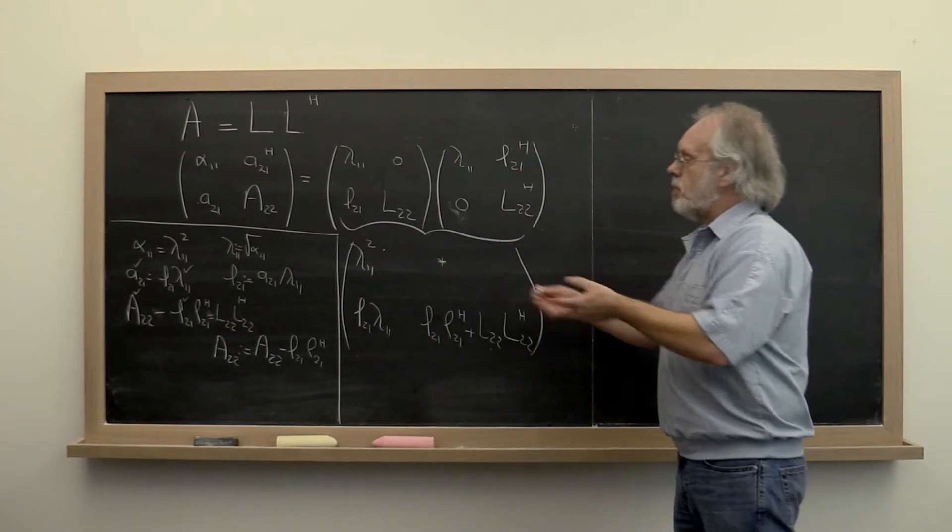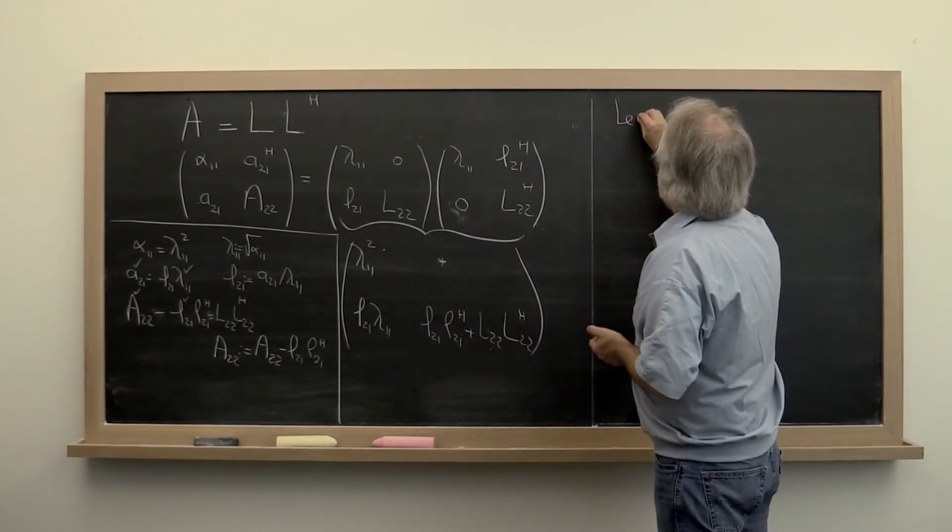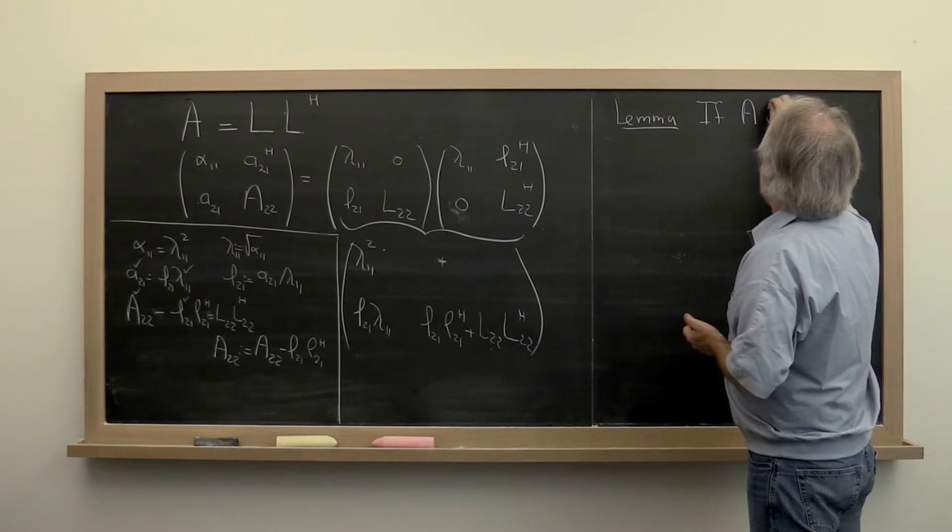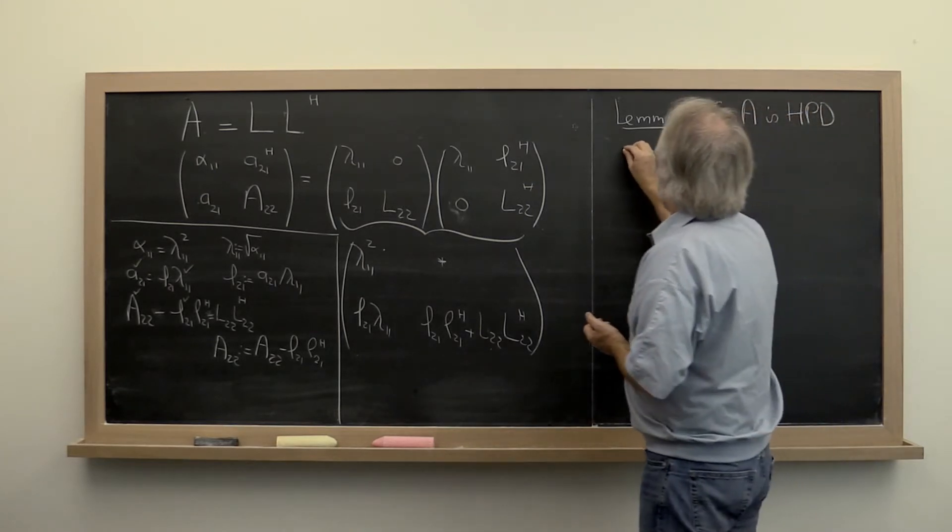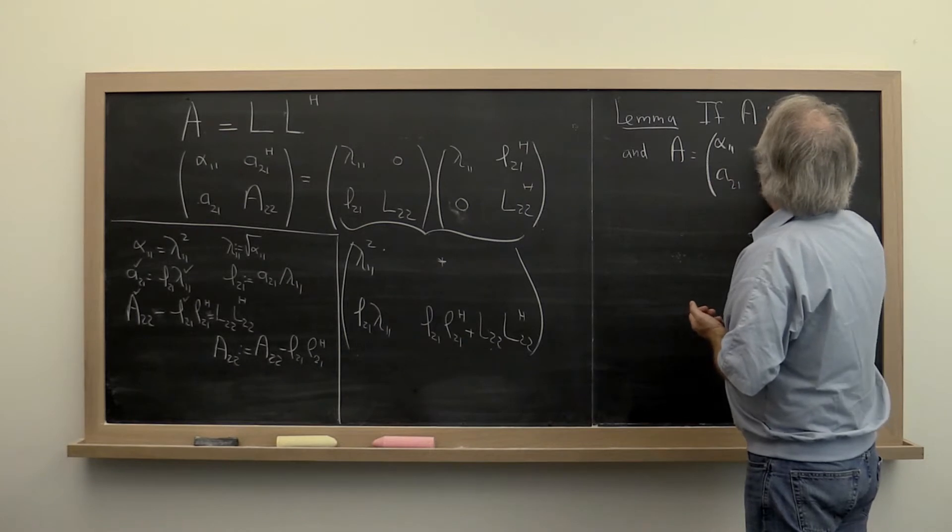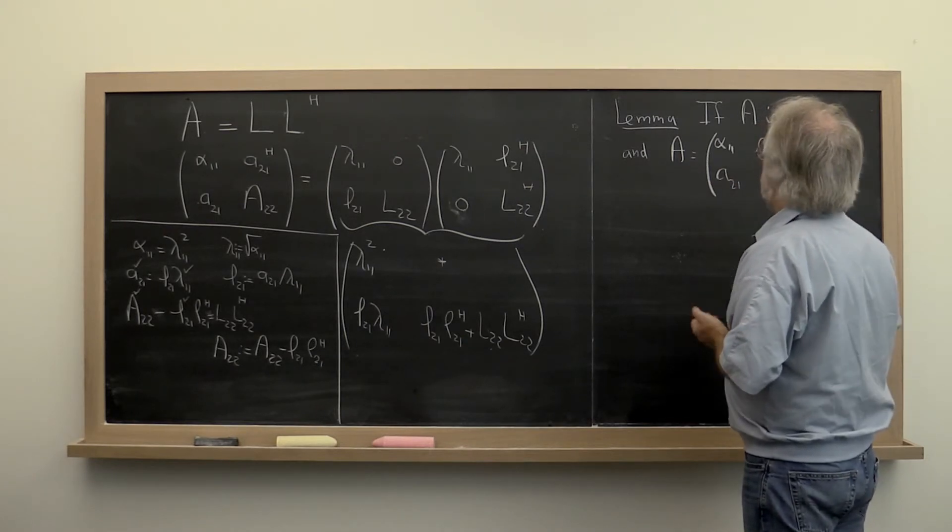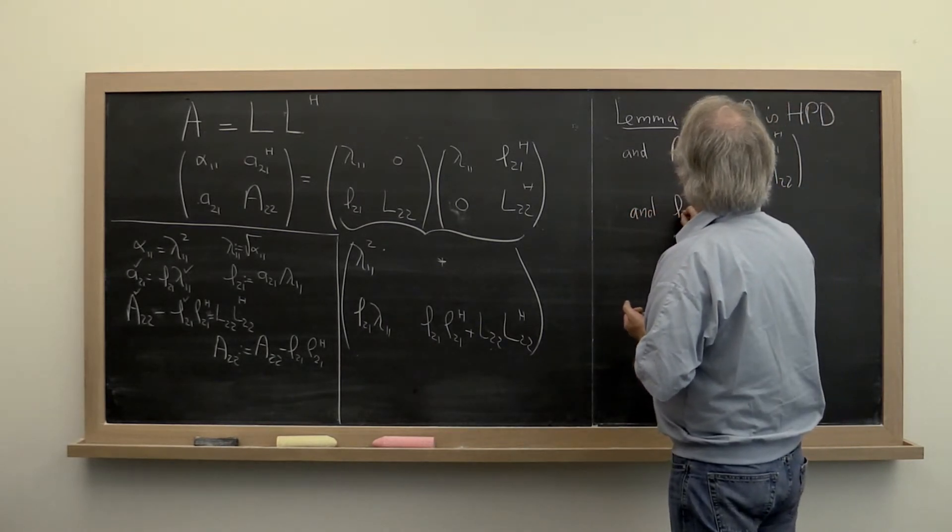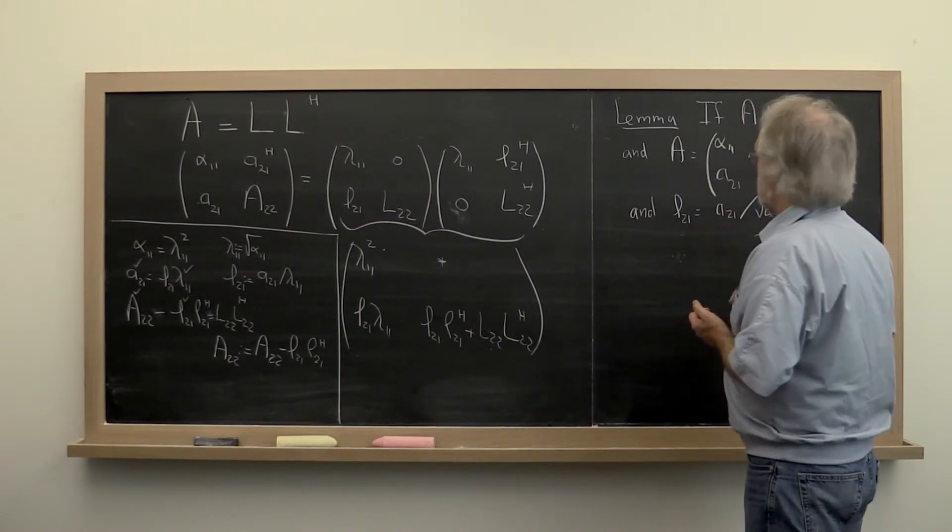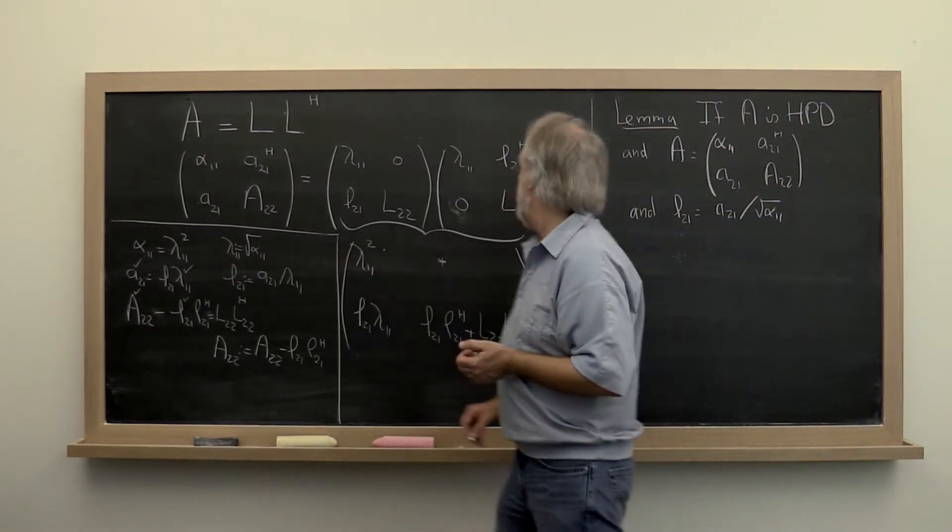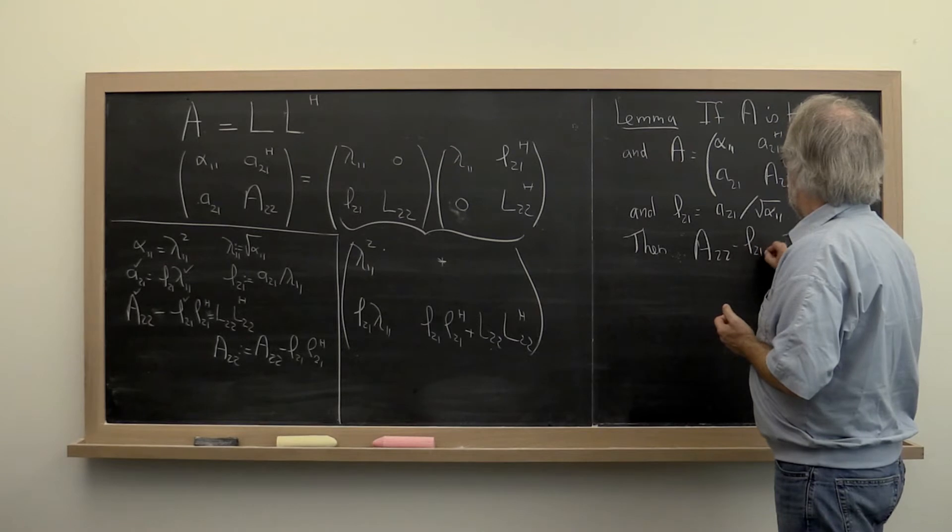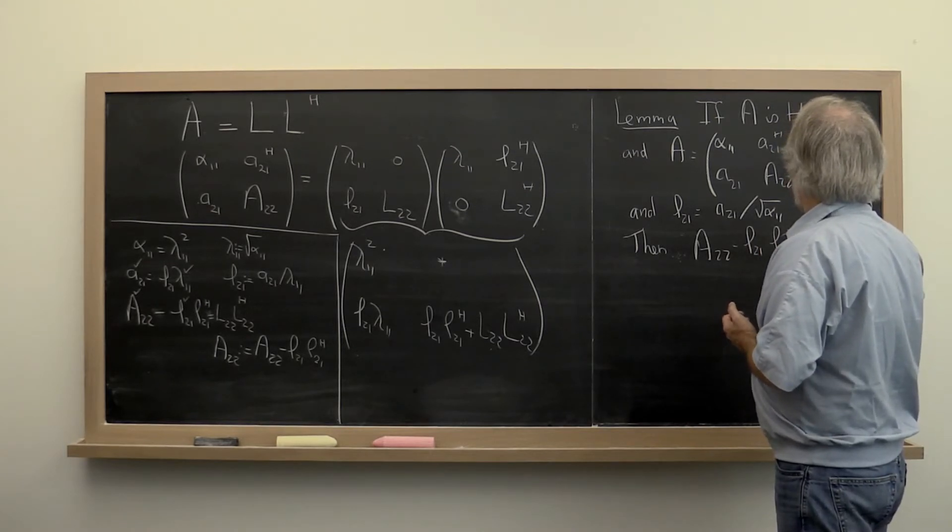So we can summarize all of that as a little lemma. We can say lemma if A is Hermitian positive definite and A can be partitioned as alpha 1 1, A 2 1, A 2 1 Hermitian transpose, A 2 2, and we define L 2 1 to be equal to A 2 1 divided by the square root of alpha 1 1, maybe this lambda 1 1 right here.